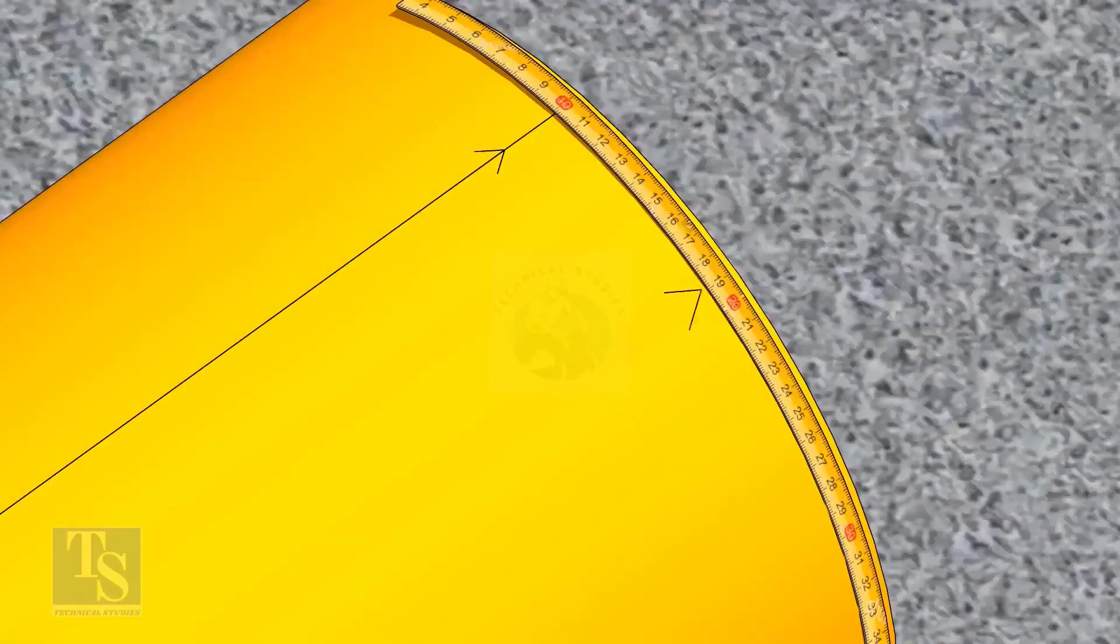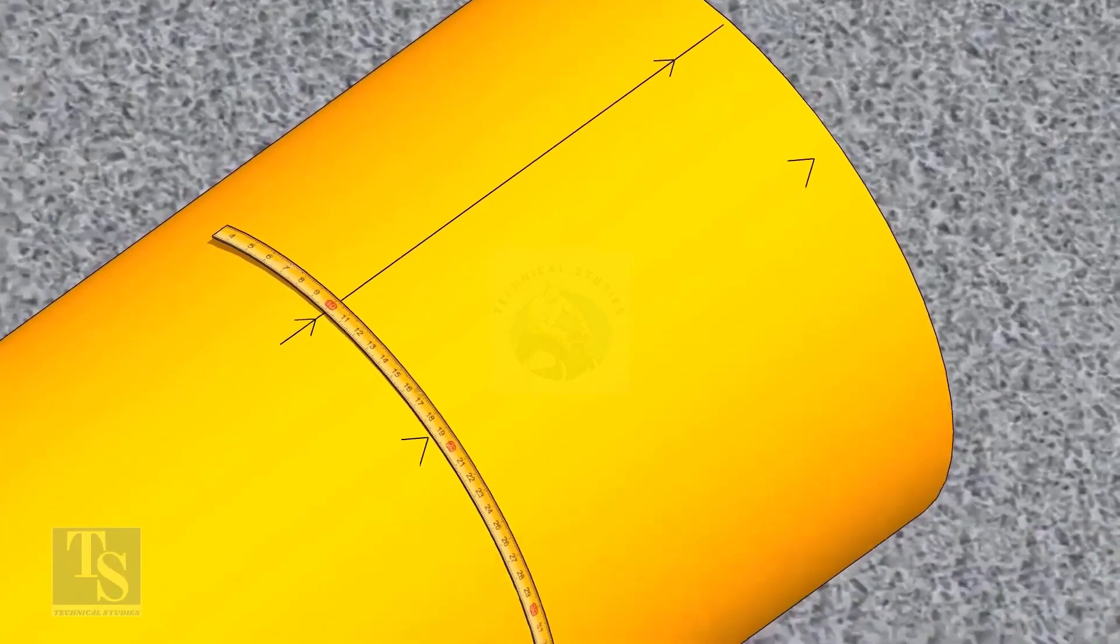Since we are rotating the flange 25 degrees anticlockwise, mark 88.5mm anticlockwise on the pipe, as shown.